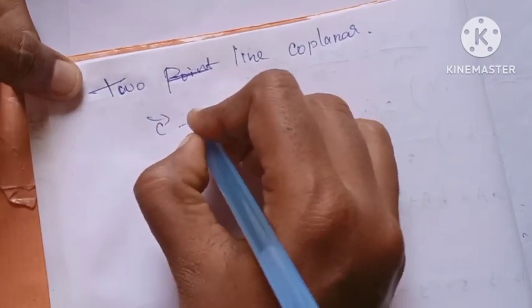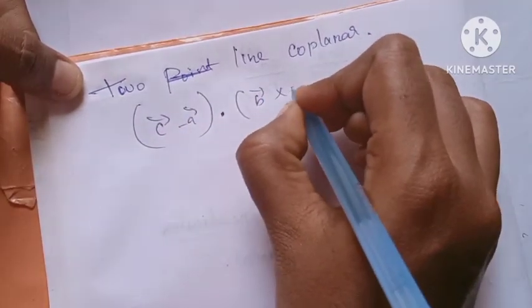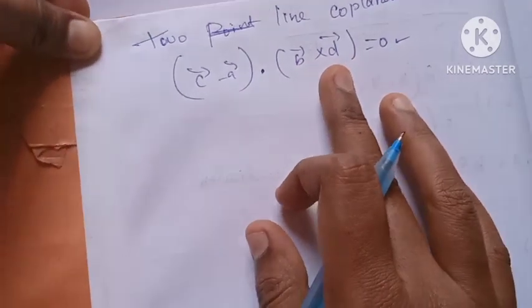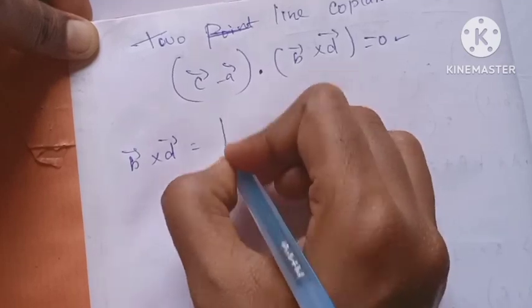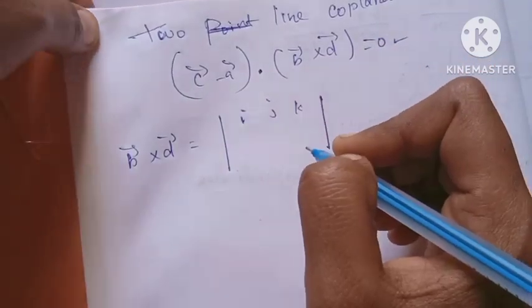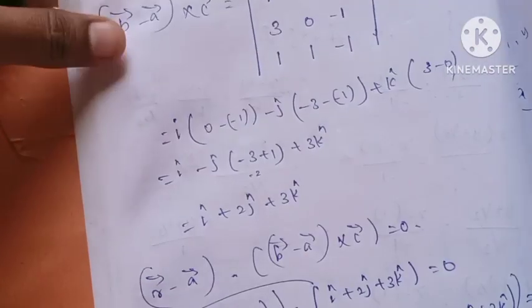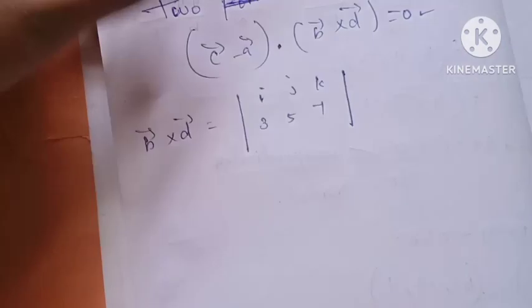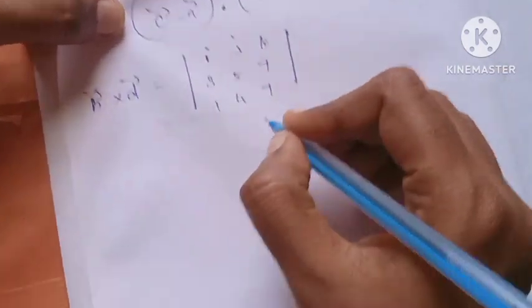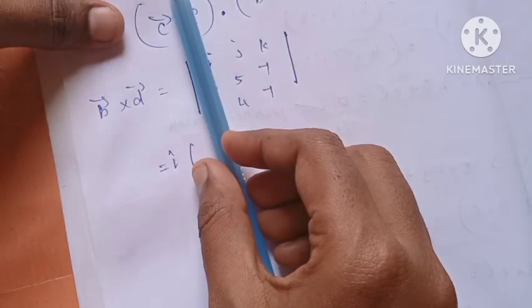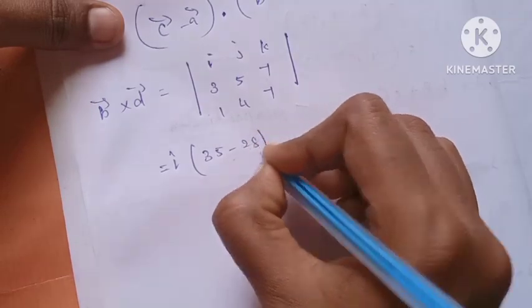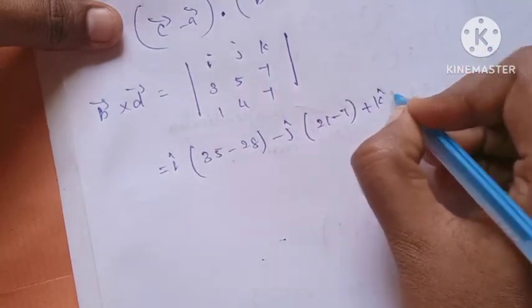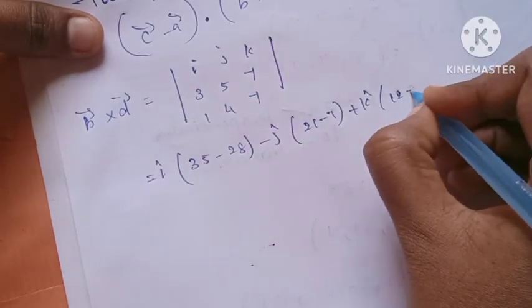The coplanar formula: C vector minus A vector dot B vector cross D vector equals 0. I will compute B cross D. Setting up the determinant with I, J, K: B vector components 3, 5, 7 and D vector components 1, 4, 7. Simplifying: I into (35 minus 28), J into (21 minus 7), plus K into (12 minus 5).